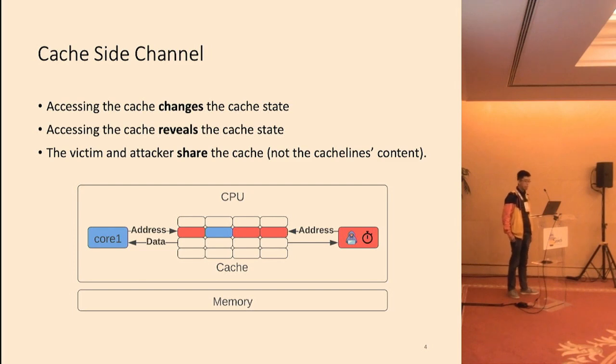As the victim process runs, it continuously accesses the cache, thus changing the cache state. Meanwhile, the attacker continuously probes the cache state by accessing some data in its own address space and measuring the access time. They can therefore learn about the cache state and what the victim is doing.